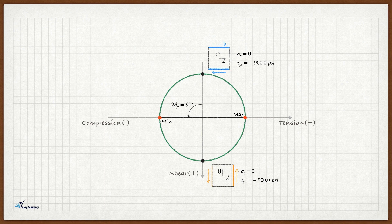Since the angle of rotation on the Mohr circle is 90 degrees counterclockwise, we need to rotate the stress block 45 degrees counterclockwise.